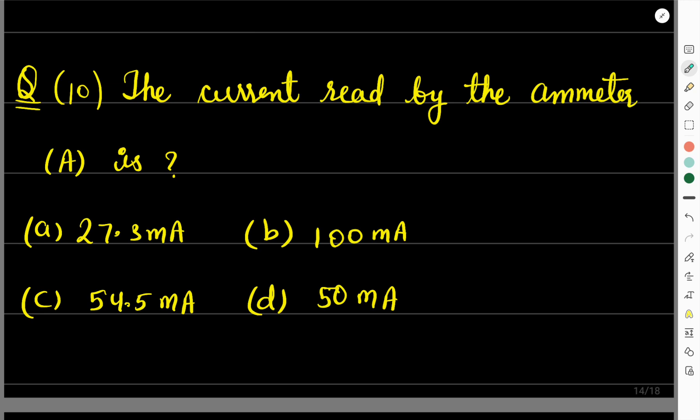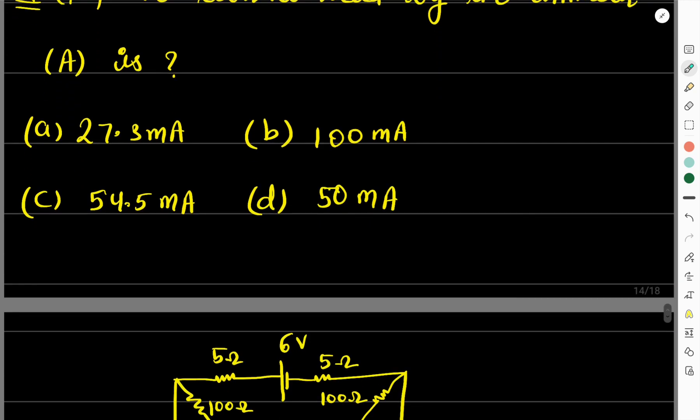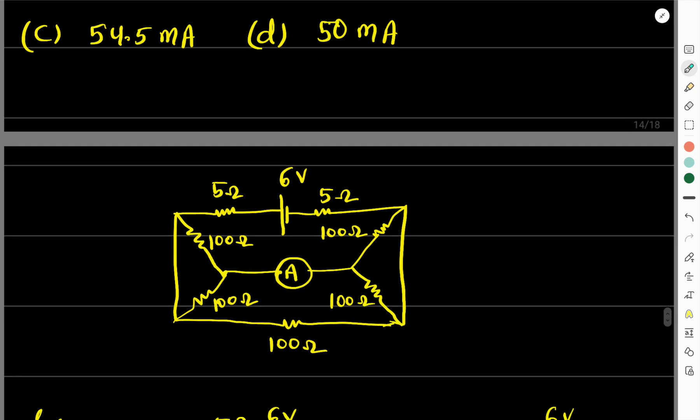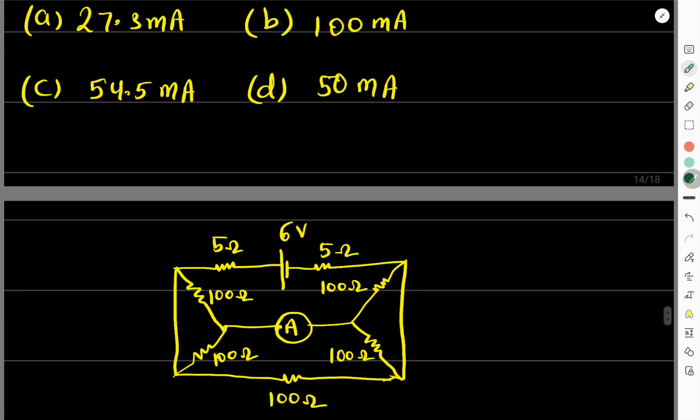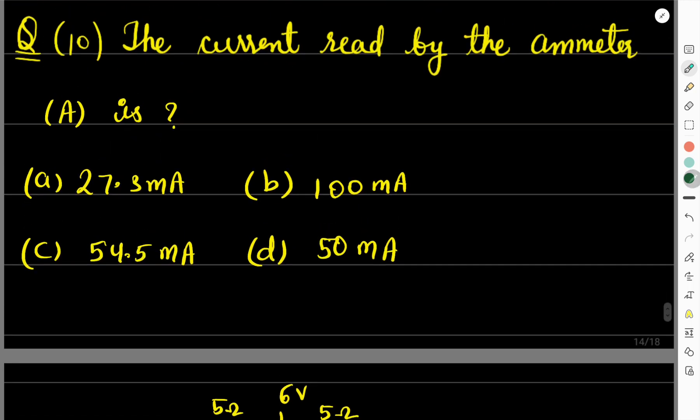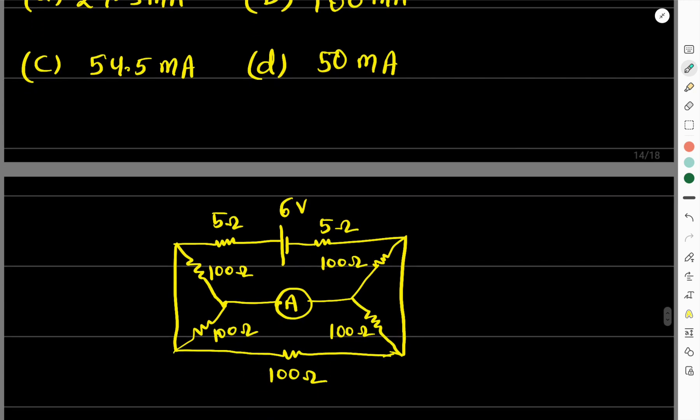The next question is from Electronics. The current read by the ammeter A in the situation - the figure is given to you. This situation is given, here is an ammeter, and here is a combination of resistances. So how much current the ammeter will read, you have to tell from the options. Here you can see point A, this is again point A.